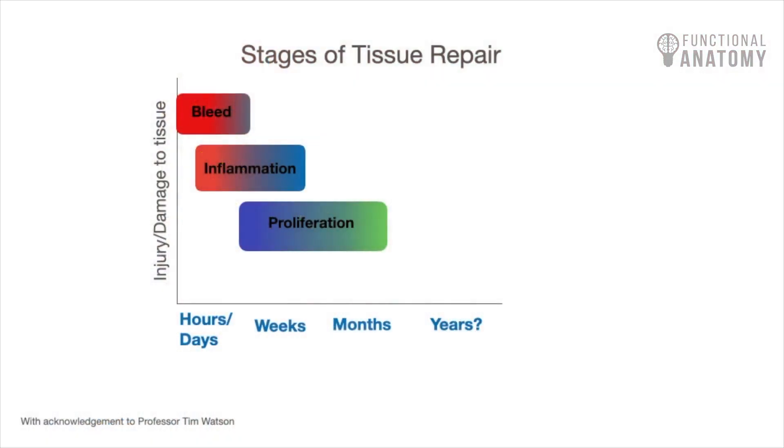Fibroblasts are the key cells that deal with building things, and they predominantly produce collagen. What we need here is a rapid form of collagen to fill in the space created by the wound. Going back to our stages: we've got the bleed, which shouldn't last too long, and then we have inflammation and proliferation. Inflammation can last days, possibly up to a week, associated with actual damage rather than repetitive irritation.